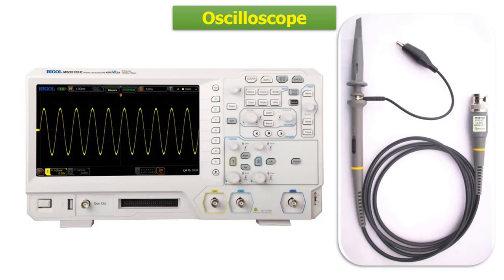They are used to display, measure, and analyze electrical signals including voltage, current, and frequency. They can display AC or DC signals, and most oscilloscopes can also measure the frequency, duty cycle, and other parameters of signals. The most common types of oscilloscopes are analog oscilloscope and digital oscilloscope.